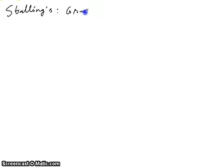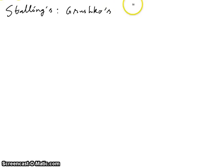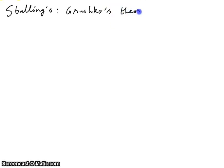I'll be talking about Stallings' result, which is a topological proof of Grushko's theorem. This is a really beautiful piece of mathematics and it's very influential in general for ideas about topological methods in group theory.